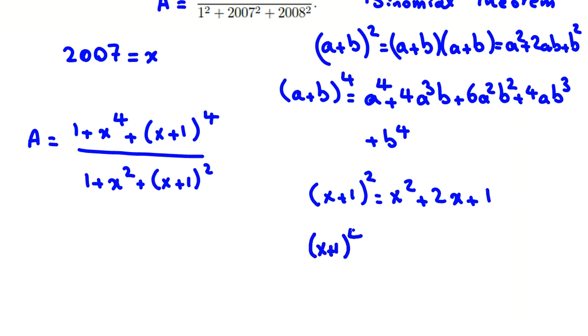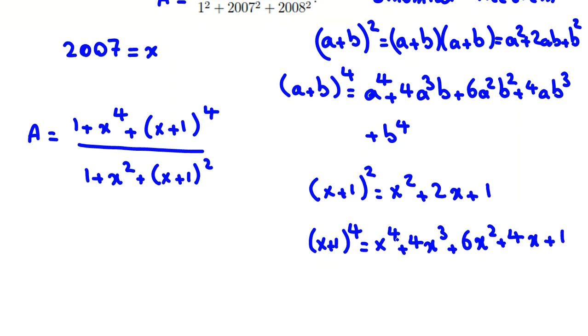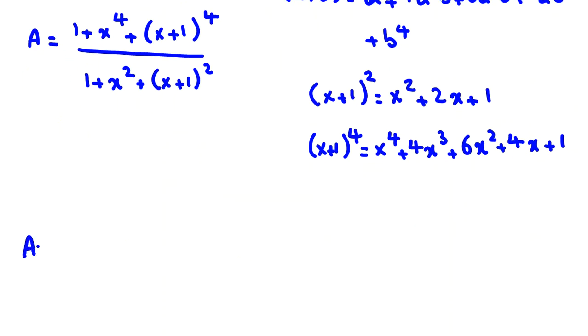And the next one, x plus 1 to the power of 4. It will be a is x, b is 1, so x to the power of 4 plus 4x cubed plus 6x squared plus 4x plus 1. Now we replace the things we've reached. So we can say A is 1 plus x to the 4, and we replace x plus 1 like this: x to the 4 plus 4x cubed plus 6x squared plus 4x plus 1.